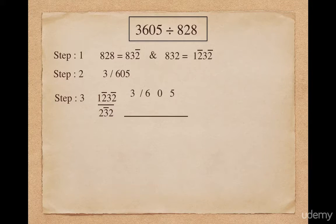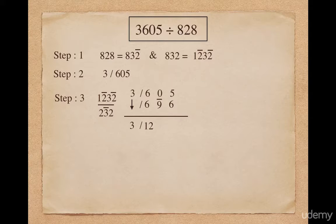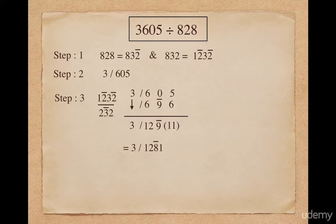To get the answer, I put the first digit 3 as it is; 3 multiplied with individual digits of 2, 3-bar, and 2 gives me 6, 9-bar, and 6. To get the remainder, add all the digits of the second column which gives me 12, next is 9-bar, and next is 11. Out of this 11, 1 will be considered as carry; it will be added to 9-bar so this remainder will become 1 2 8-bar 1. It's not possible to have a negative quantity in the final answer, so we convert 1 2 8-bar 1 into a positive quantity using Vinaculum, giving 1 1 2 1.